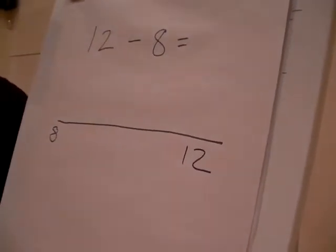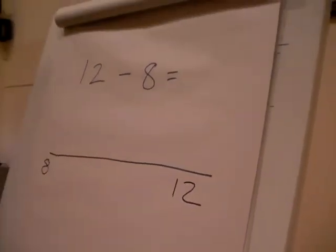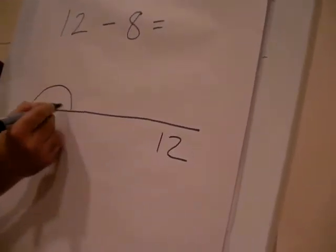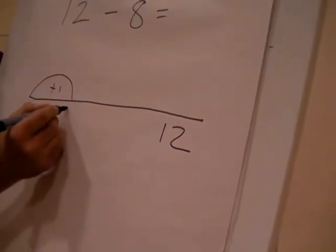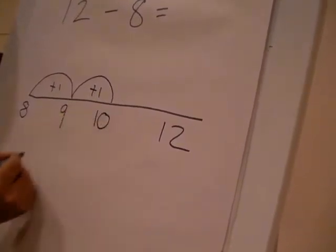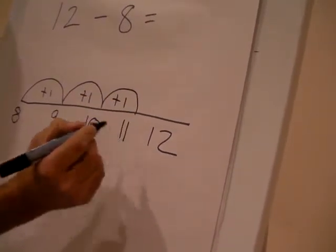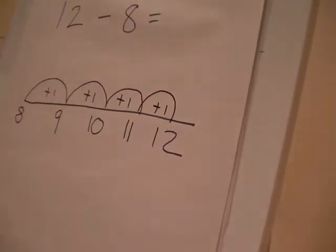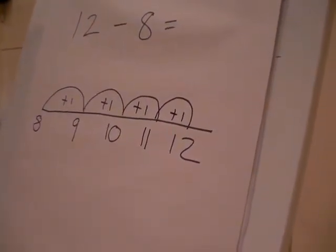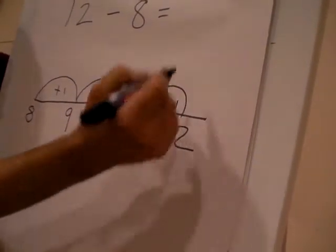We get the children to jump from 8 to 12. And that shows them the difference between the two numbers. So the children go, right, 8, add 1, gives you 9. Add another 1, gives you 10. Add another 1, gives you 11. And then if we add 1 more, that takes us to 12. And we ask the children to work out how many jumps they've done. We've done 1, 2, 3, 4. The answer is 4.